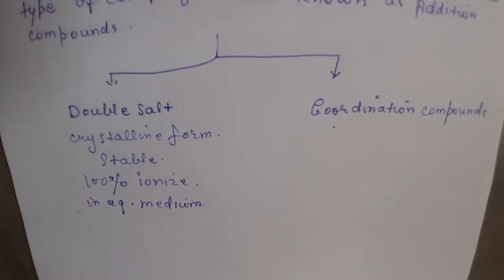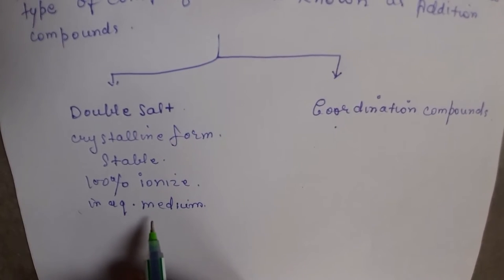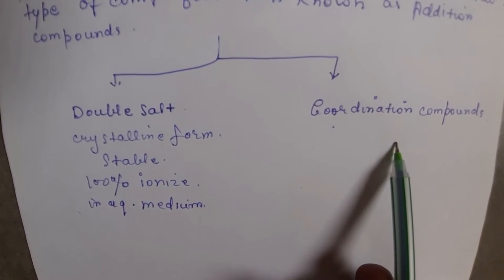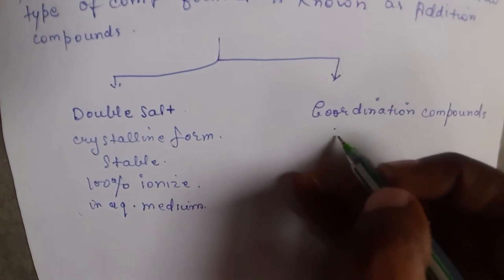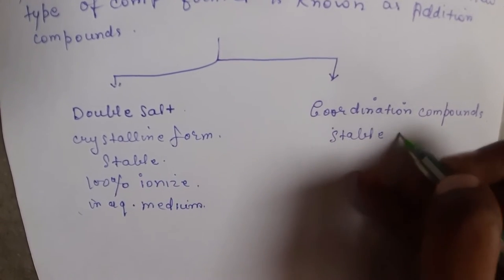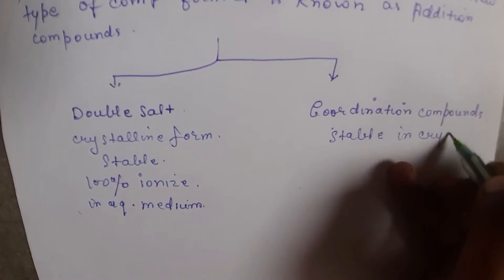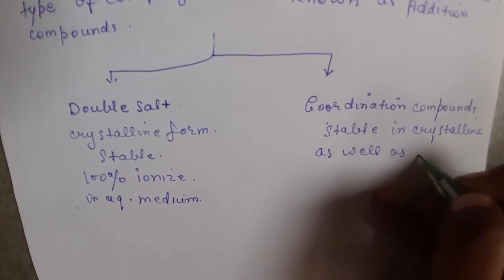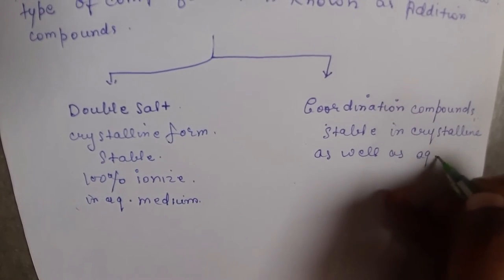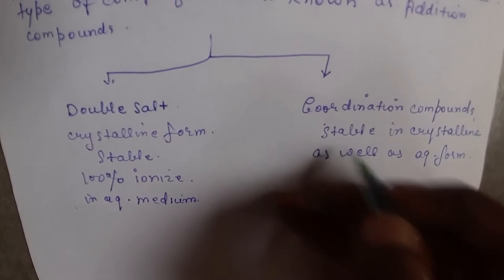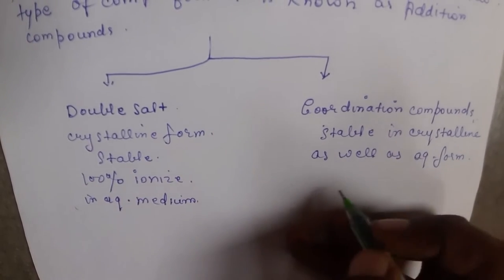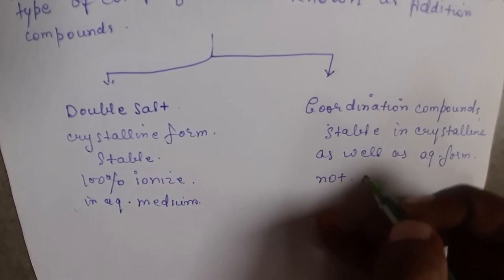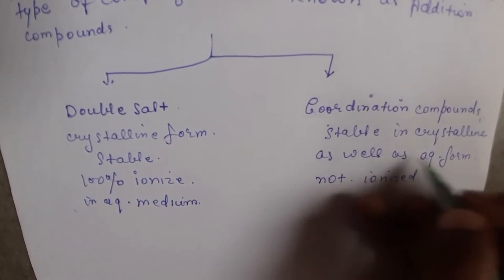Coordination Compounds, on the other hand, are stable in both crystalline form as well as aqueous form. Coordination Compounds are not ionized in aqueous medium because they are stable.